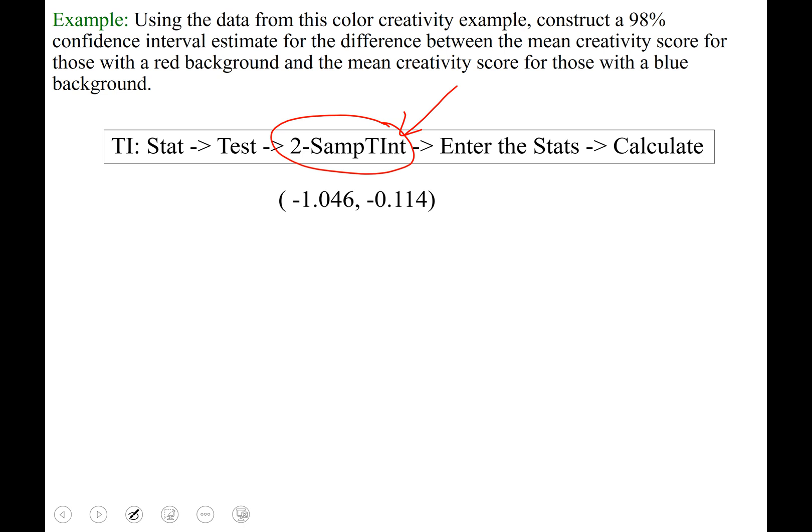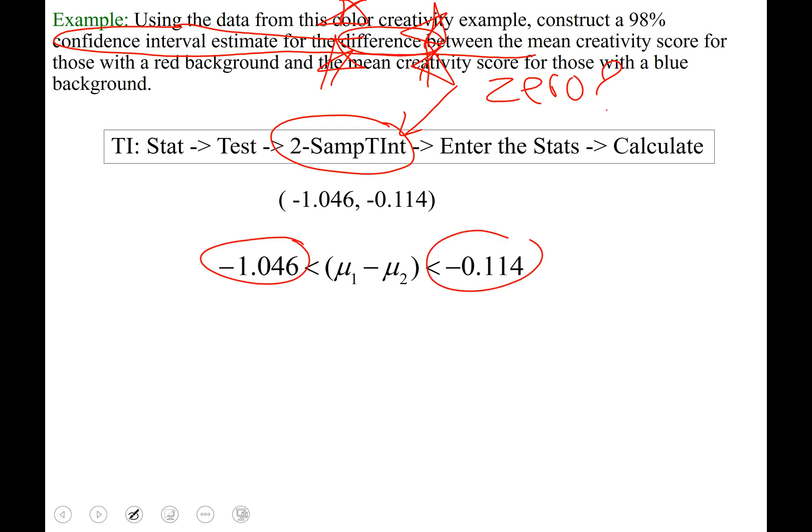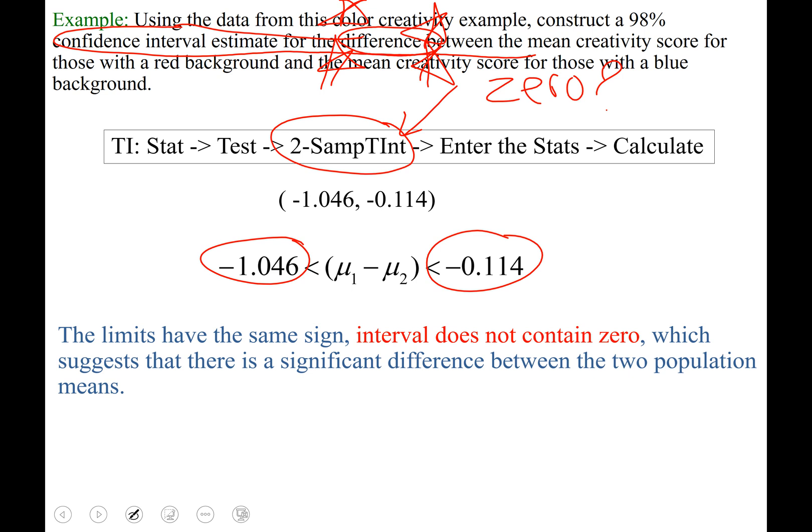That being said, we want to focus on where the number 0 is at. Because remember, 0 represents no difference. So we're being asked to construct a confidence interval estimate for the difference. Whenever you're seeing set up a confidence interval for the difference, you need to think about 0. Where is it? Is it in the confidence interval or not? Well, our limits are both negative, which means if I were to graph these two numbers on a number line, 0 would not be between them. So this confidence interval does not contain 0.